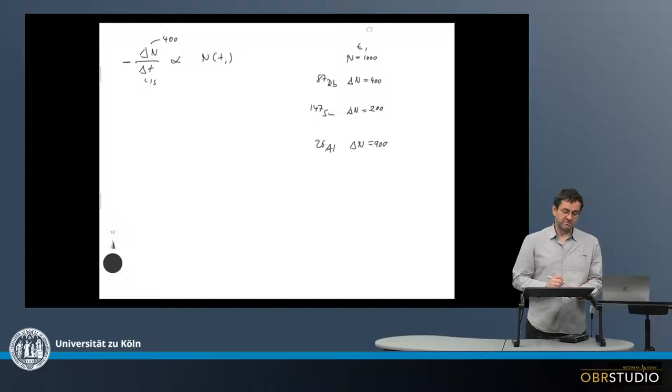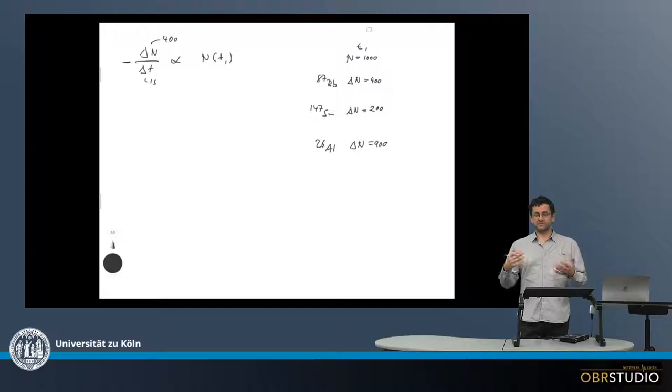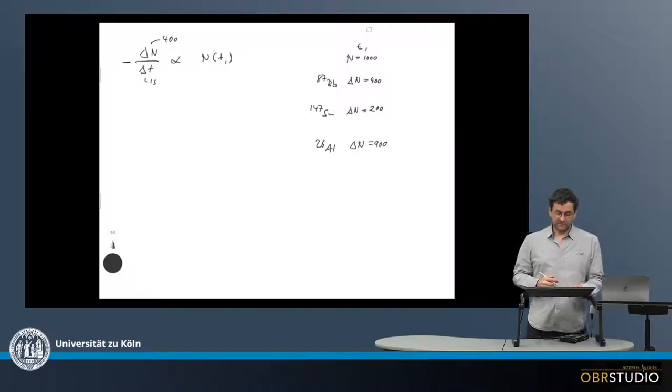And as said, this is the amount of material that is subtracted, therefore the minus sign, this amount subtracted from the initial. So we subtract 400 from the initial 1,000, and then we know how much of the rubidium-87 is still present.